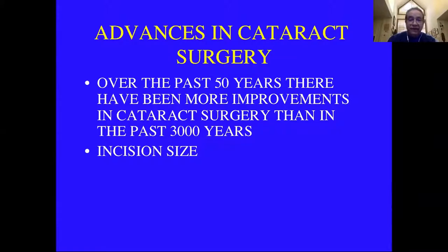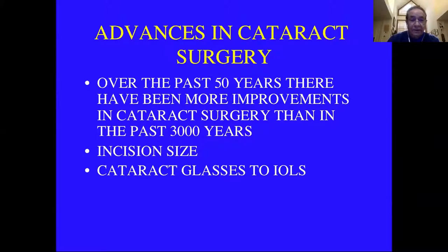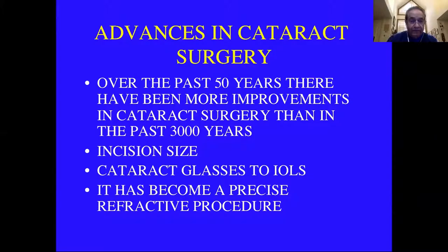A lot of this has to do with the fact that we can use a much smaller incision size. We've gone from cataract glasses to first contact lenses and then intraocular lenses, which are just an unbelievable step forward. People in developing countries who had cataract surgery before intraocular lenses and had to wear fake glasses — frequently they would be lost or damaged in the first year. And after that, they generally had uncorrected vision of 20/200 or less. Cataract surgery has now become a very precise refractive procedure.